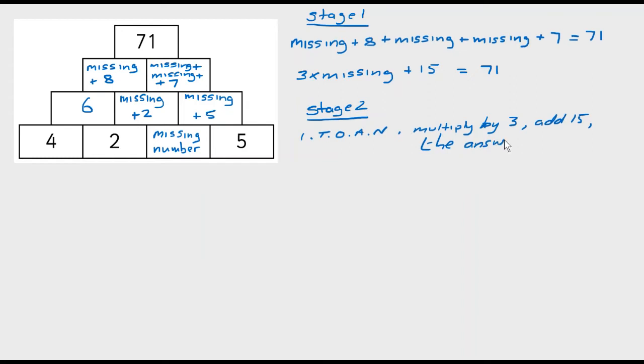And my answer is 71. So this is now an I think of a number problem. And we're going to solve it using the technique we learnt with I think of a number problems. So I think of a number, which is my missing number, I don't know what it is, but it's my missing number. What do I do? I multiply it by 3, then I add 15, and my answer is 71.